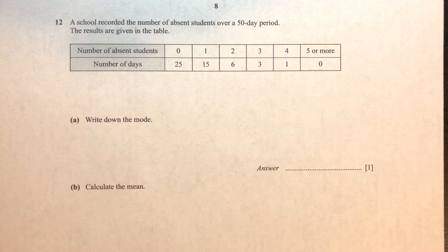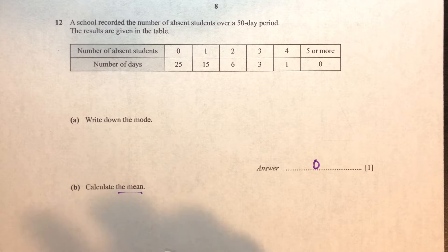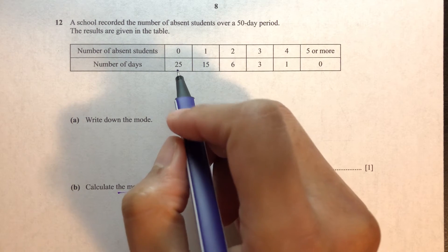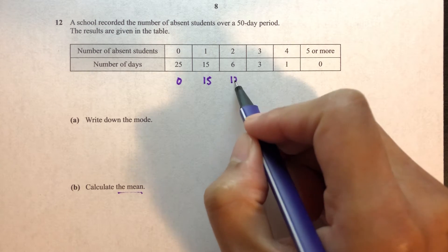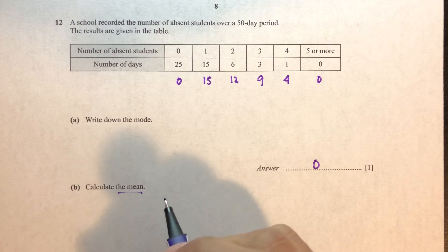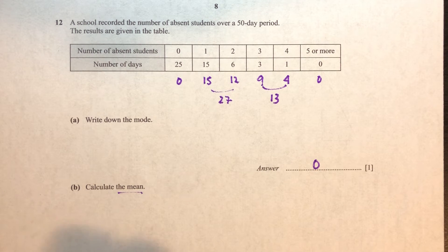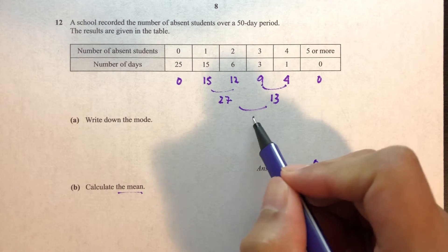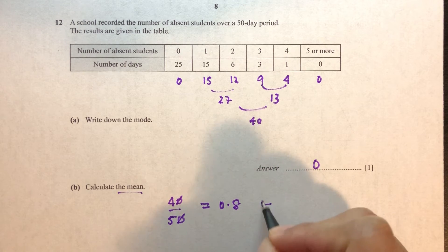Question number 12. A school recorded the number of absent students over 50 days. Write down the mode — the mode has the most frequencies, so the mode is 0, which has 25 days. Calculate the mean: 0 times 25 is 0, 1 times 15 is 15, 2 times 6 is 12, 3 times 3 is 9, 4 times 1 is 4 — wait, that gives 0. Adding all: 15 plus 12 is 27, plus 9 plus 3 is 13 total 40, so the mean is 40 divided by 50, which equals 0.8.